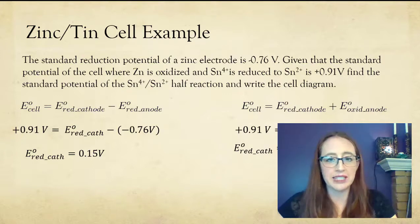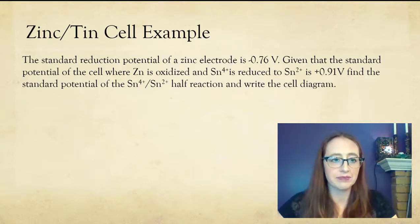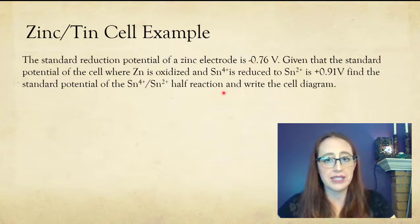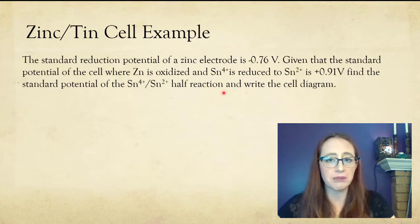Now I ask you to write the cell diagram for this, which is another word for cell notation. So let's think about this. We know that zinc is going to be our anode, and so that's going to go first. And we know that tin is going to be our cathode, and that's going to go second. And that we're going to have a salt bridge in between them.